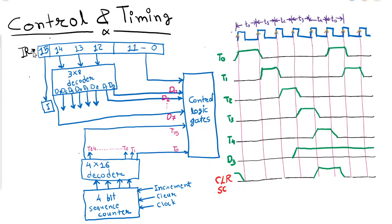Here we will learn how an instruction is decoded by the computer. This is the instruction register. Bits 0 to 11 will represent the address in case of a memory reference instruction, and in case of register reference and IO instructions, they will represent the operation — the opcode.